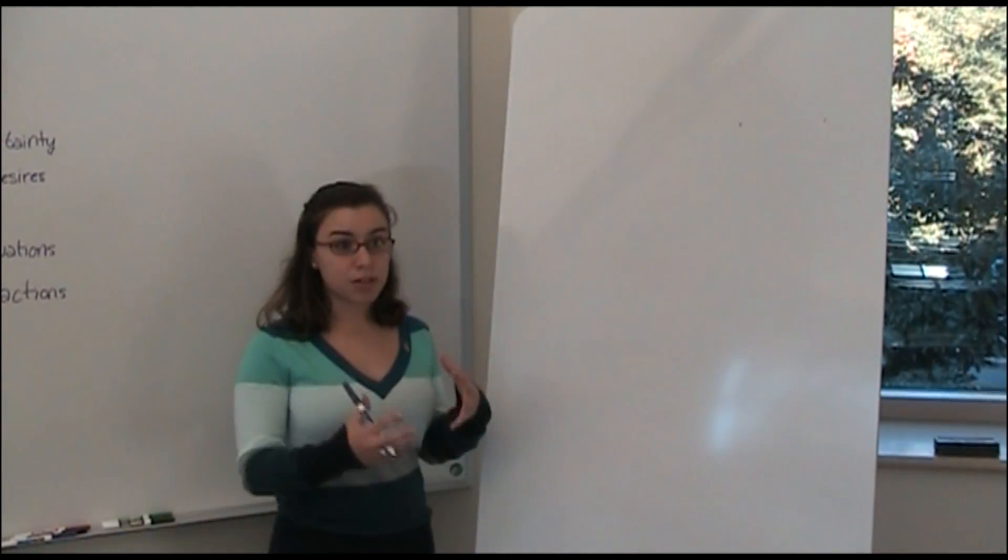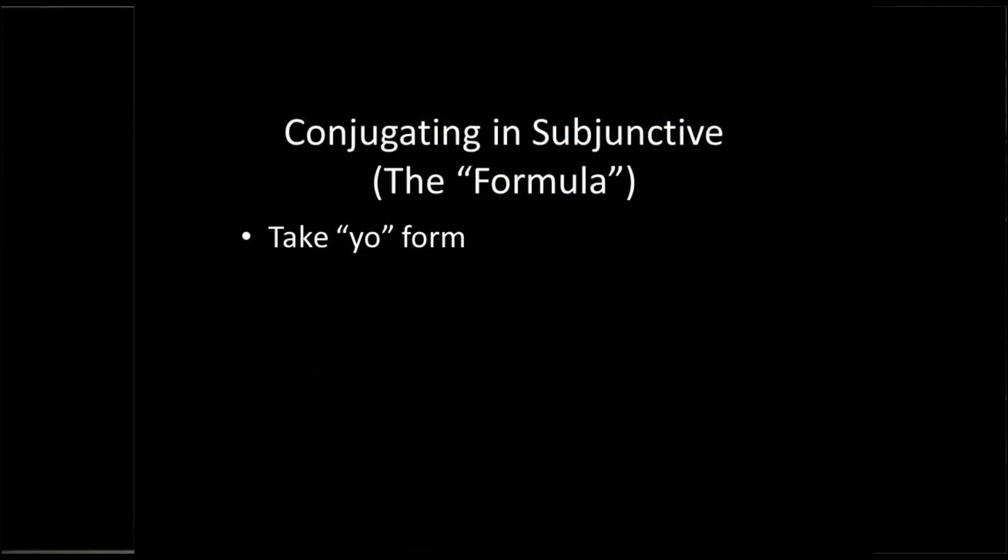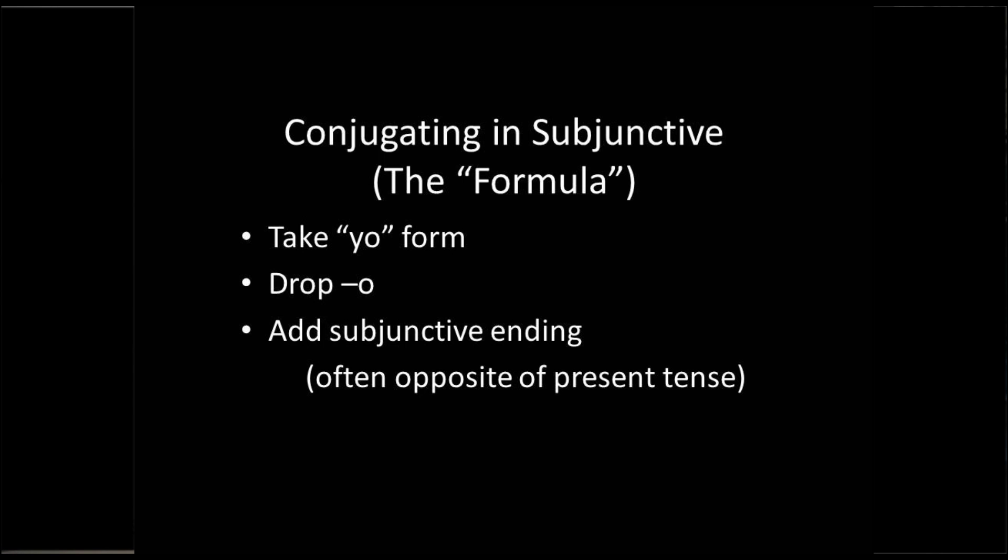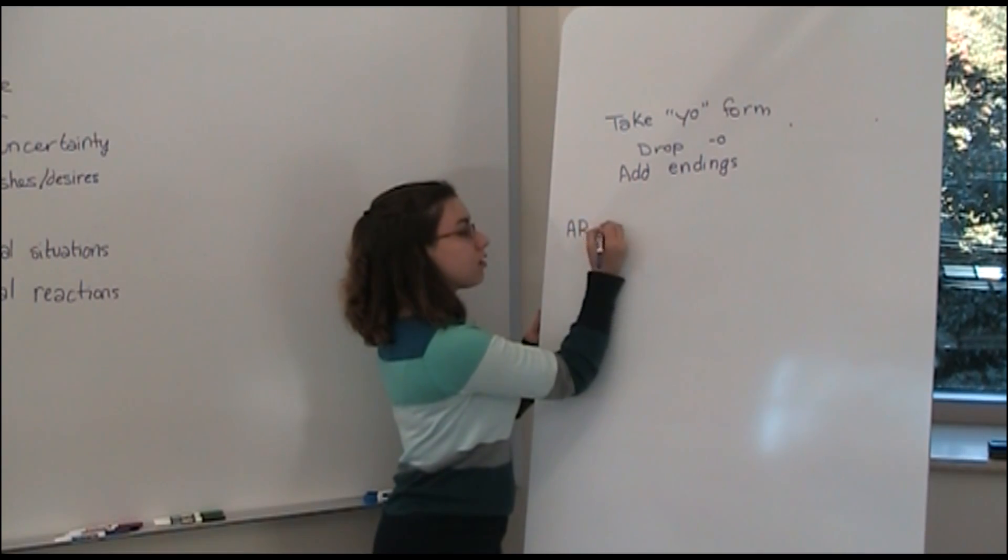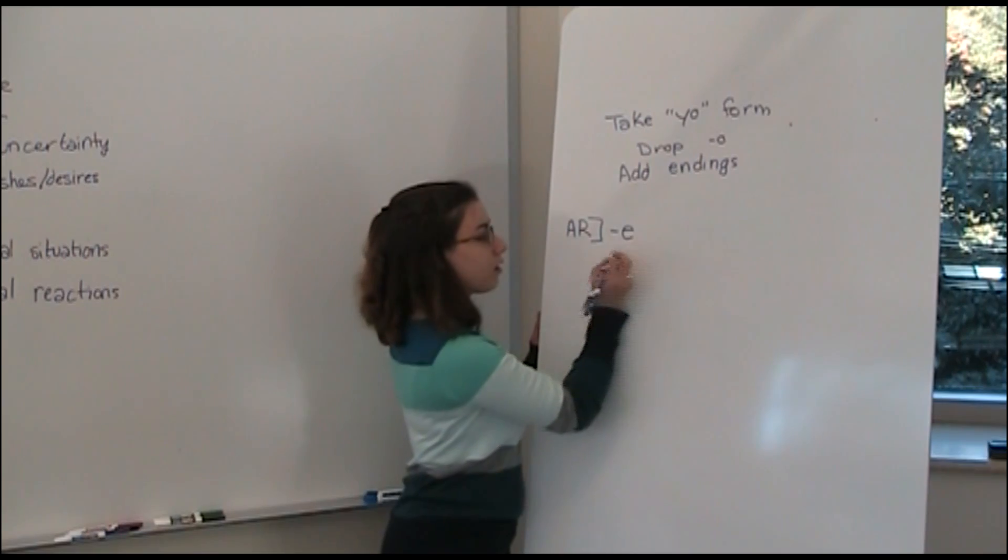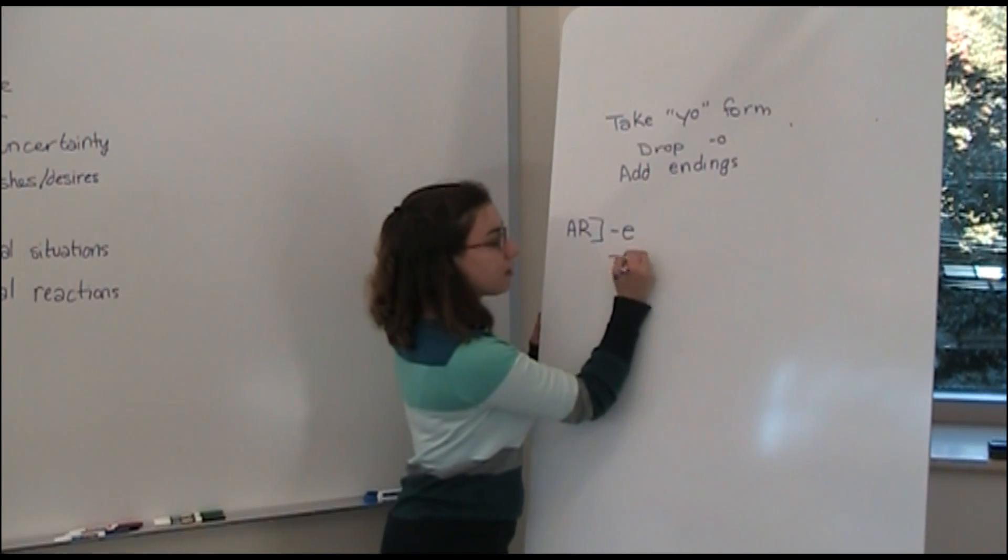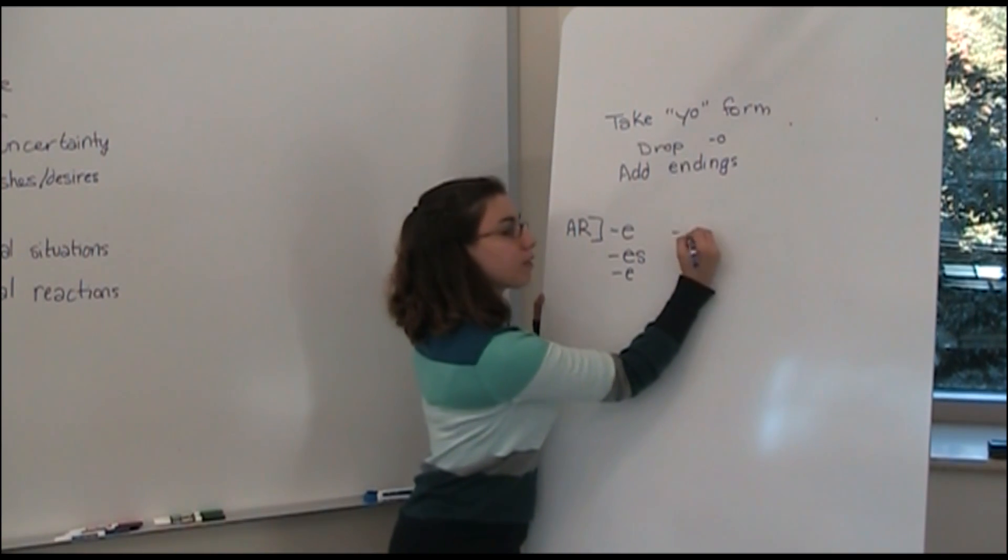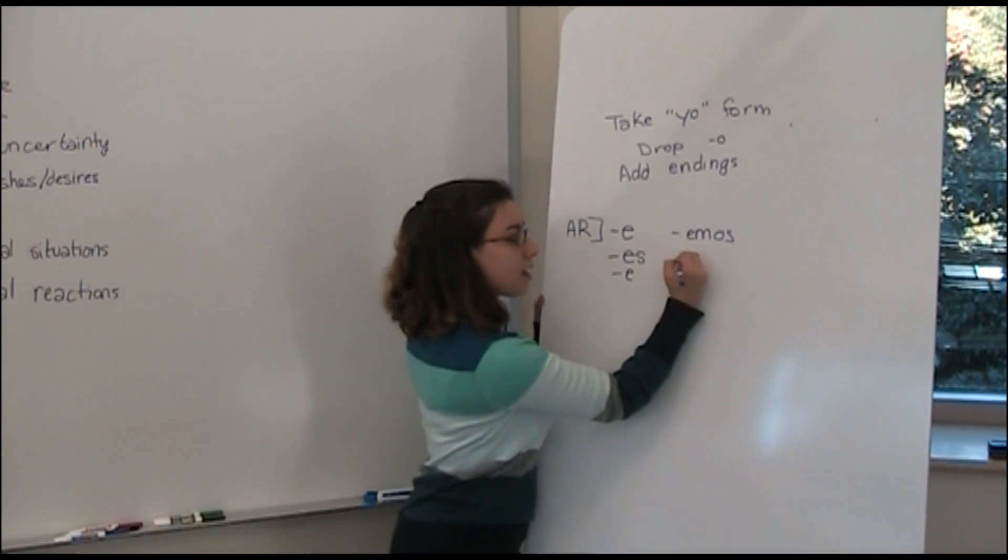The formula that we use is we take the yo form of a verb, you're going to drop the o, and then you're going to add the endings. These are often the opposite ending of what we use in the present tense. So for -ar, it's going to be -e, -es, -e, -emos, -éis, and then -en.